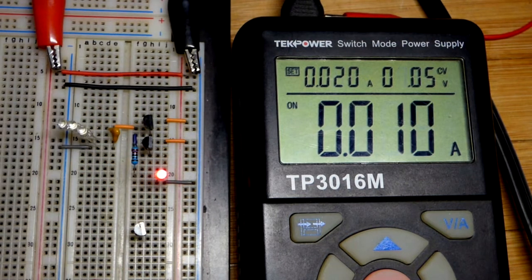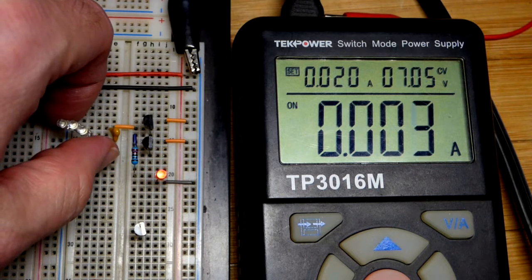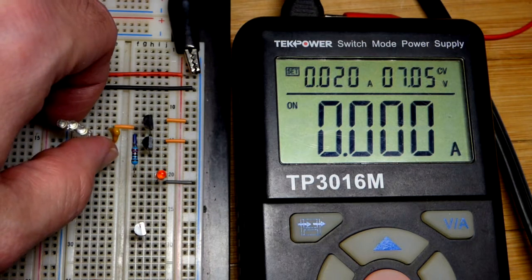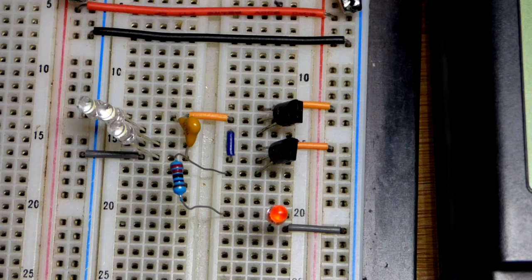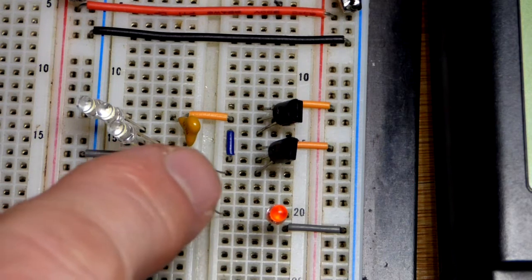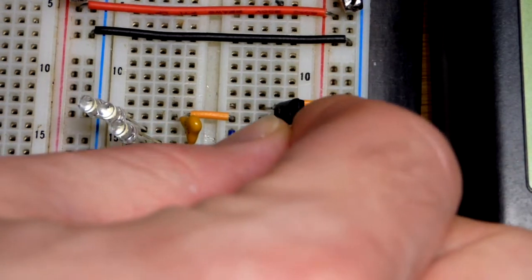We have a capacitor there storing some of the charge. I can help to discharge it through my hand right there by touching both ends. So now like the last video we're going to get rid of one of the transistors.